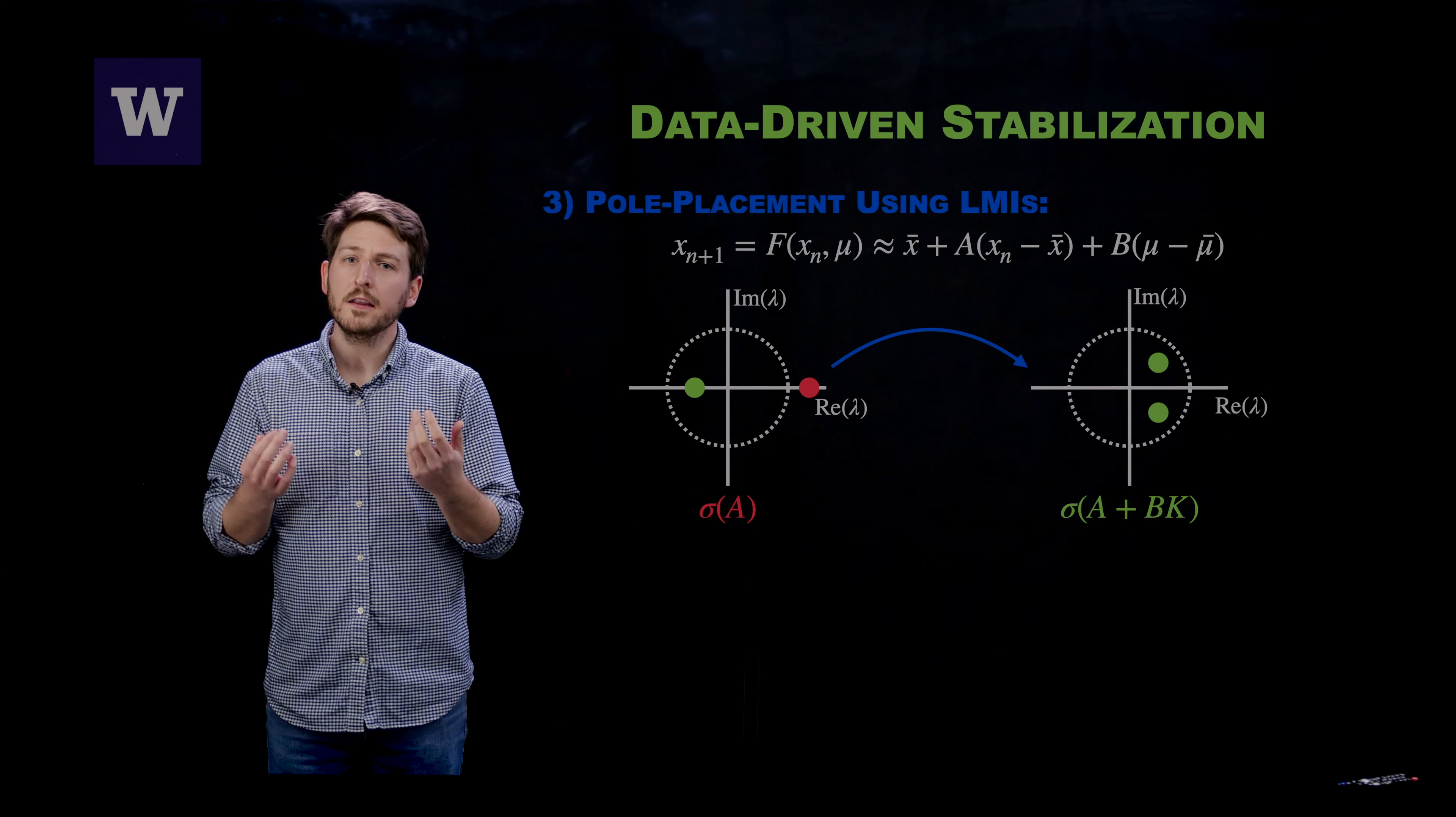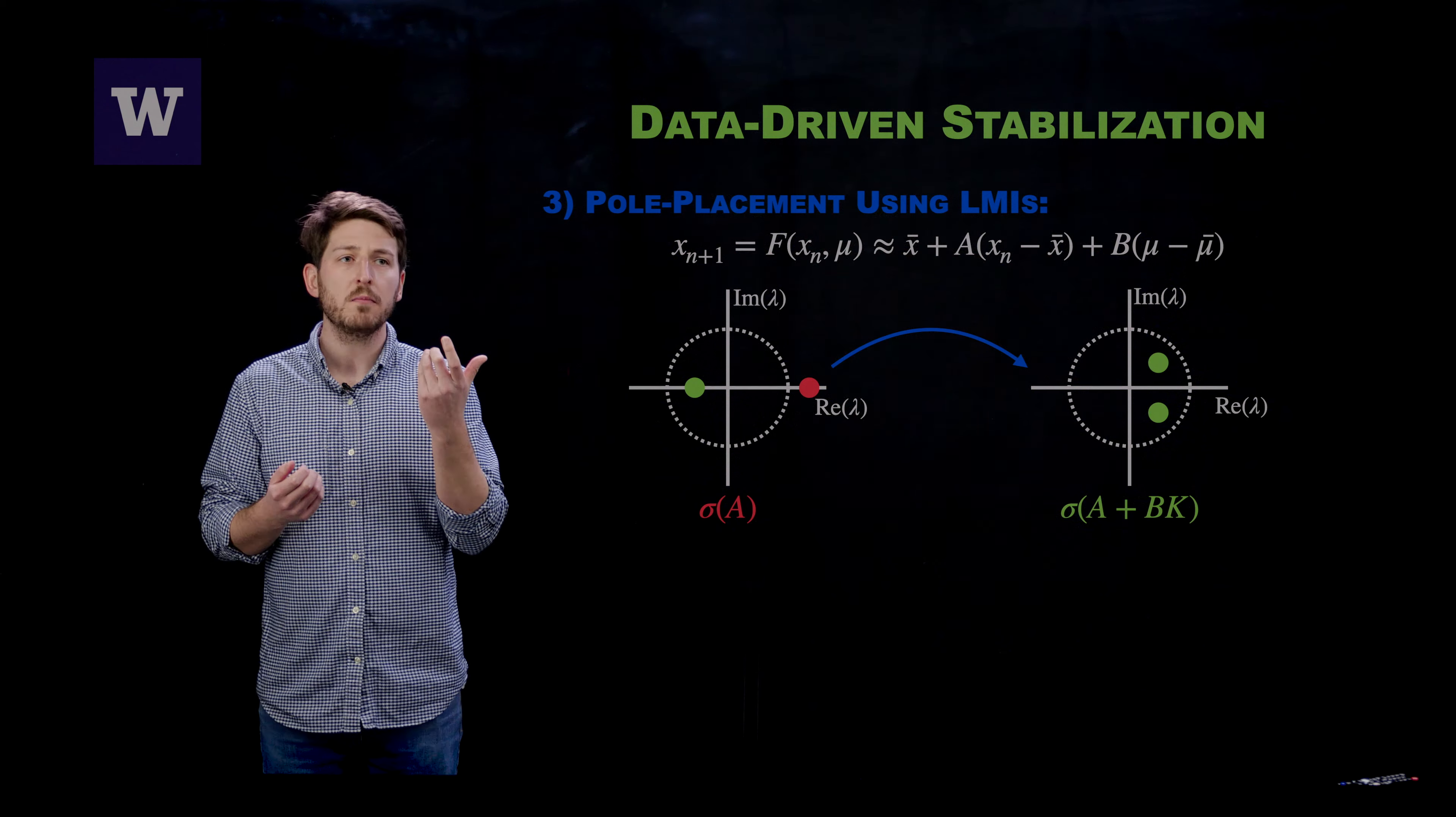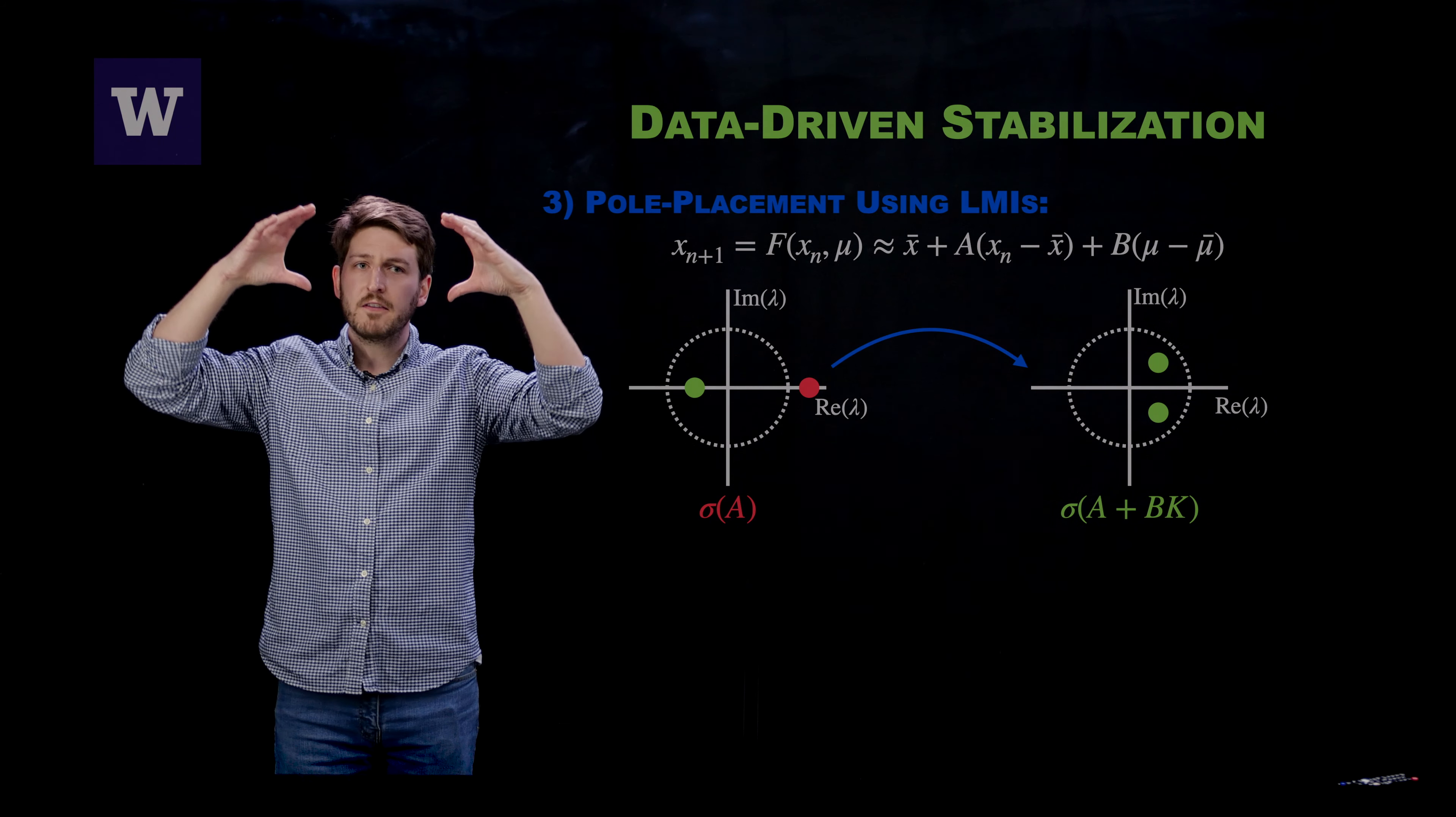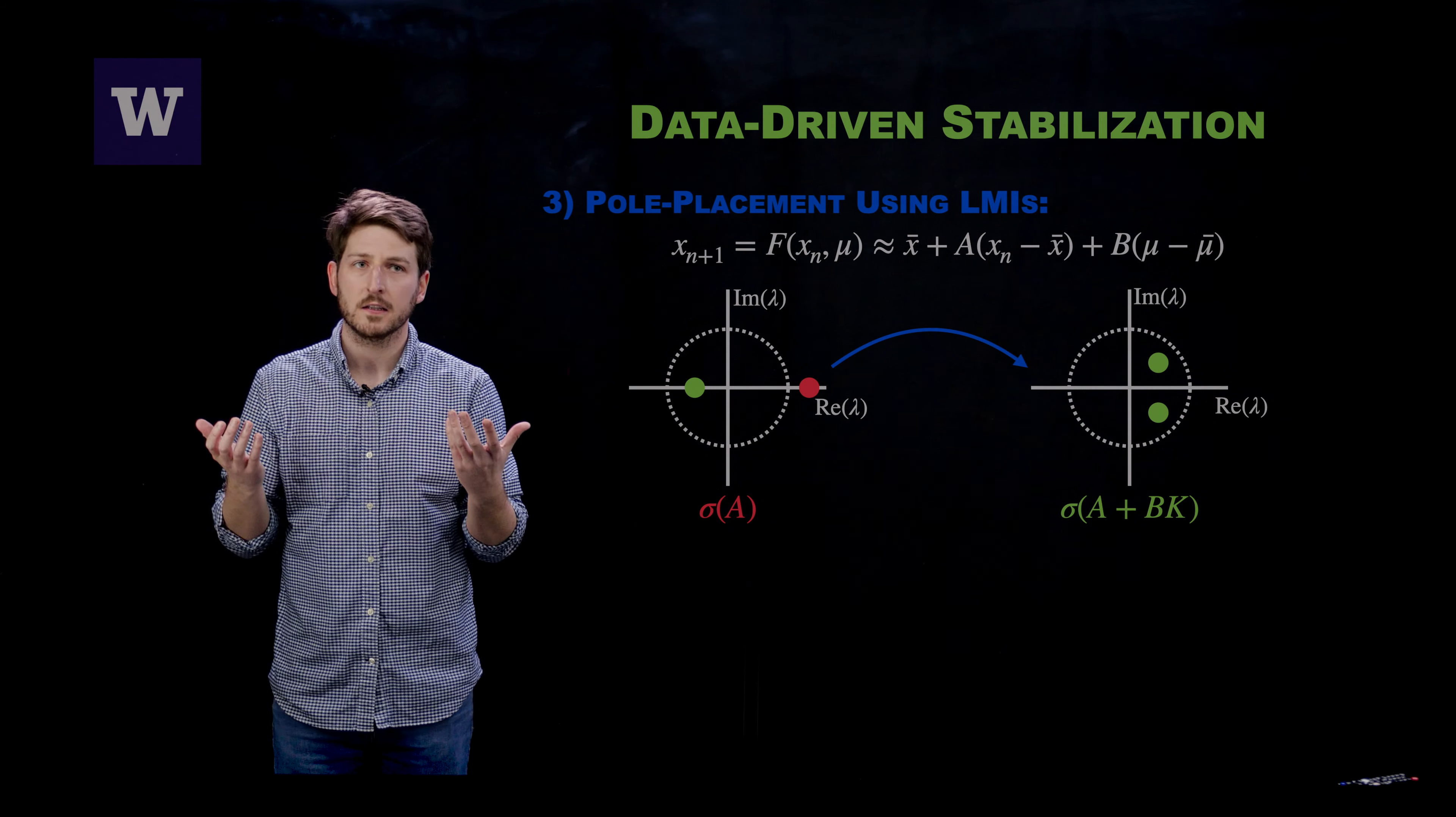And the way that this works is you're going to introduce small parameter tweaks that are state-dependent, given by a control matrix K, in such a way that the linearization around one of these periodic orbits or periodic points will have its eigenvalues entirely contained inside of the unit circle, and in this way stabilizing the periodic orbit.